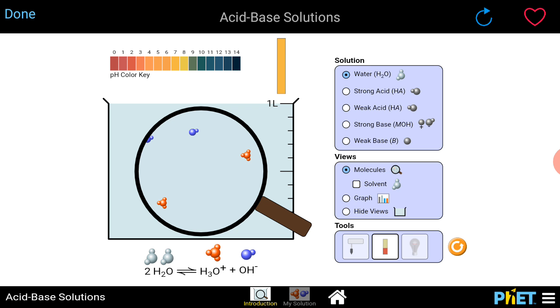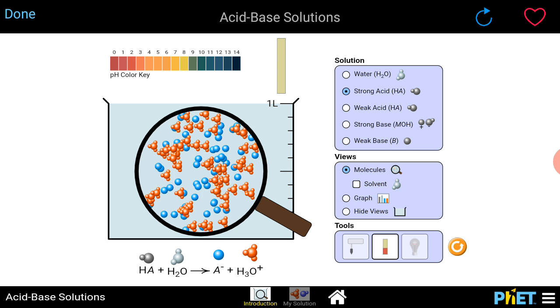What happens if we put the litmus paper in strong acid? It turns red, sorry, bright red. Now, the pH level is at 2.